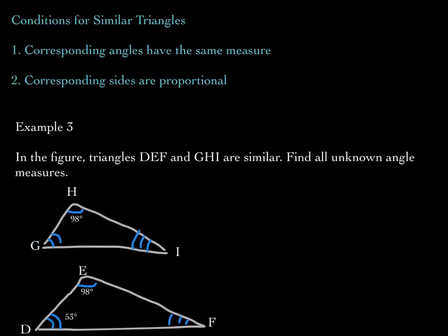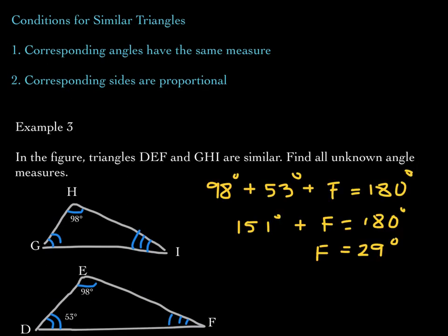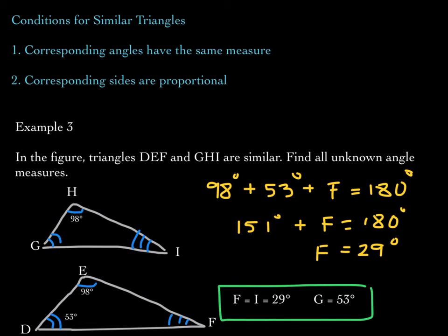In this example, triangles DEF and GHI are similar. Find all unknown angle measures. Using the angle sum formula: 98 + 53 + angle F = 180, so angle F = 29 degrees. Since angle F corresponds to angle I, angle I is also 29 degrees. Angle D corresponds to angle G, so angle G is 53 degrees. This uses the first condition for similar triangles — corresponding angles have the same measure.